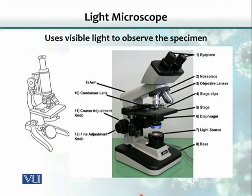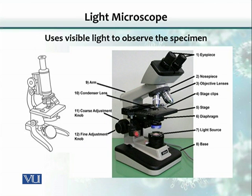A light microscope is not called 'light' because it doesn't weigh much — it is because it uses light as a source of illumination. As you can see, there are various parts: the stage or base, the illumination source which is the light source, and the stage on which we place a slide or specimen.